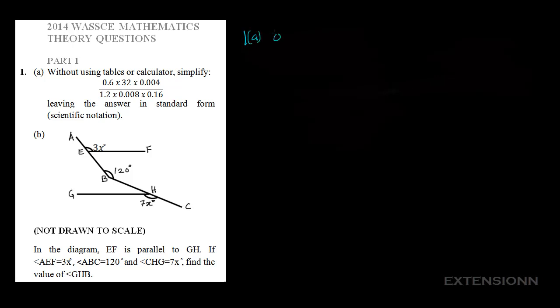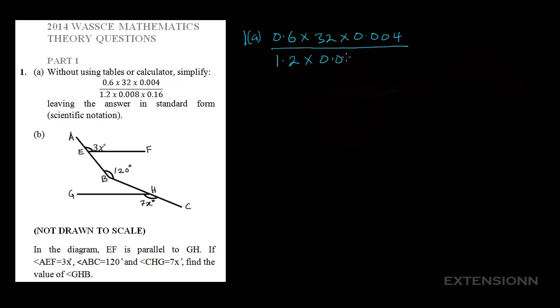So let's bring out this expression. We have 0.6 times 32 times 0.004, all over 1.2 times 0.008 times 0.16.